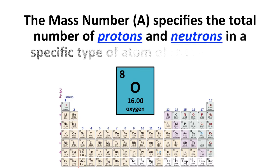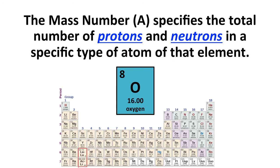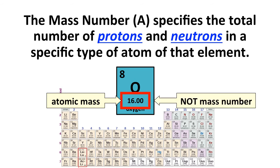Now, there's another thing that is important to know about in terms of atoms and atomic structure, and that's called a mass number. We sometimes symbolize it by the letter A, and the mass number specifies the total number of protons and neutrons together in a specific type of atom of that element. Now note, this bottom number, the 16.00 for oxygen, is the atomic mass. It is not the mass number. The mass number is generally going to be quite similar to the atomic mass, but it's not exactly the same. And we'll clarify that distinction. So the number given, 16.00, is the atomic mass.